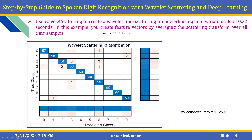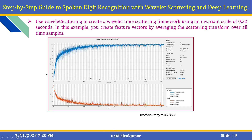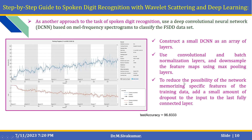Using Wavelet Scattering classification, you create a wavelet time scattering framework using an invariant scale of 0.22 seconds. Feature vectors are created by averaging the scattering transform. The predicted classes versus true classes are shown. You can check the test accuracy and validation accuracy using the wavelet transform with a 0.22 second invariant scale. The training process diagram shows accuracy versus loss.